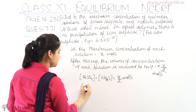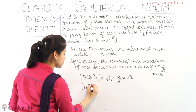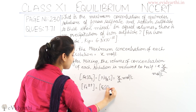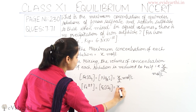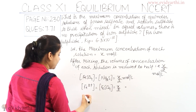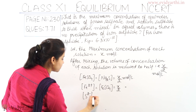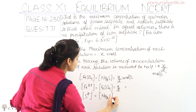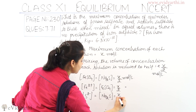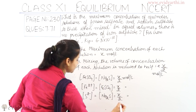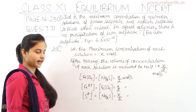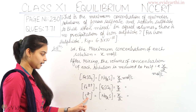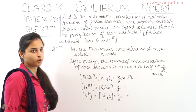We can say that the concentration of FeSO₄ equals the concentration of Na₂S, which in turn equals x/2 moles per liter. So the concentration of Fe²⁺ equals x/2 mol/L, and the concentration of S²⁻ from sodium sulfide is also x/2 moles per liter.